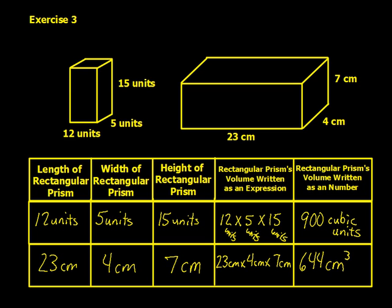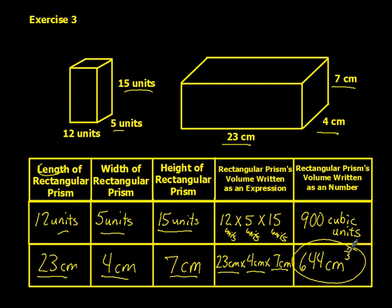So here's our completed table. Pretty self-explanatory. The length here, 12 units, width, 5. Height, 15. 12 units times 5 units times 15 units equals 900 cubic units. And the second row, same idea here. The length is 23. The width is 4. The height is 7. So we have 23, 4, and 7. 23 centimeters times 4 centimeters times 7 centimeters equals 644 cubic centimeters.